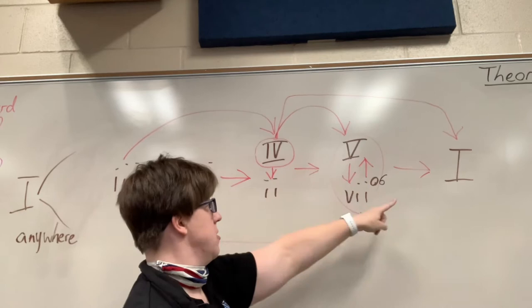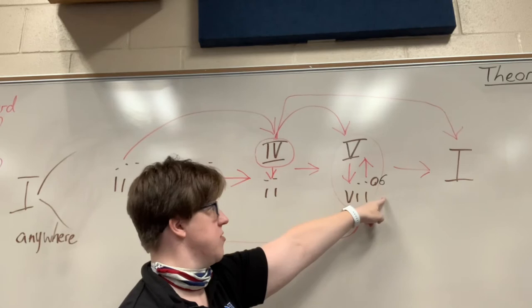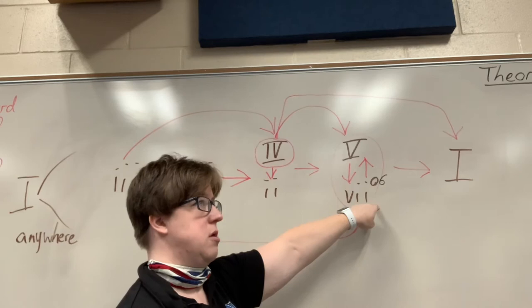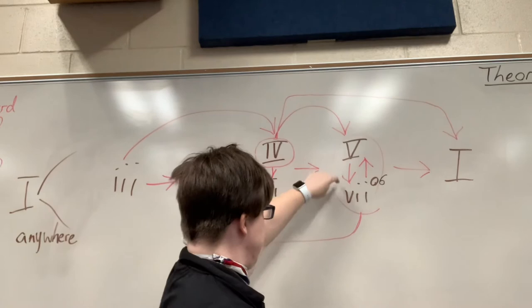And when you're using your 7 chord, it's always going to be in first inversion, which has the 6. Which means your 3rd is on the bottom. Never double the root of this chord. That's your leading tone. You never want to double your leading tone. It makes it sound super duper crunchy. And then you have all sorts of other problems like voice leading.